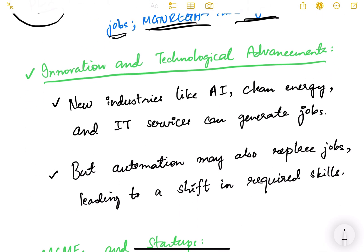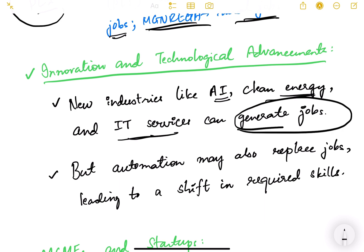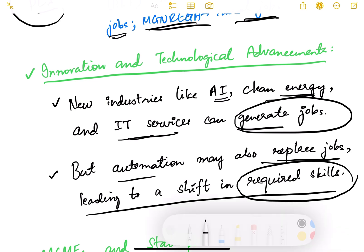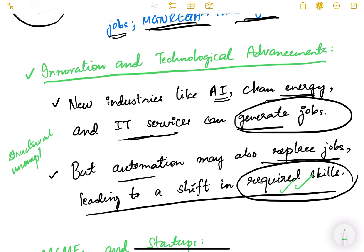The third driver is innovation and technological advancement. New industries like artificial intelligence, clean energy, and IT services can generate jobs. However, there is a caveat: automation may lead to replacement of jobs, causing a shift in required skills. In the short term there may be reduction in jobs during technological upgradation, but over time people can acquire new skills and find jobs in advanced sectors. The unemployment that occurs during such structural shifts is known as structural unemployment.